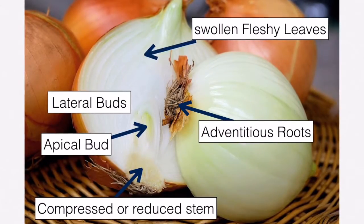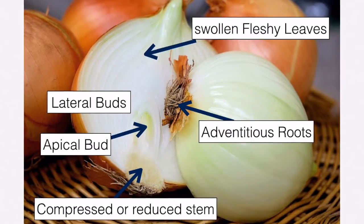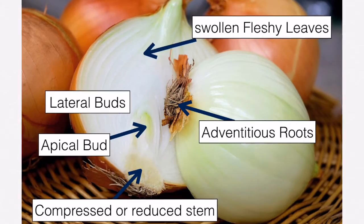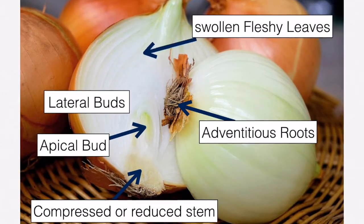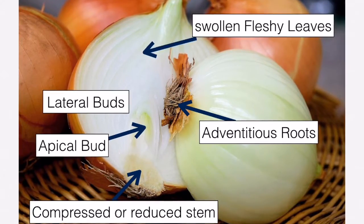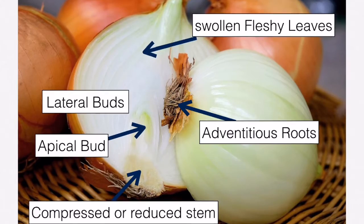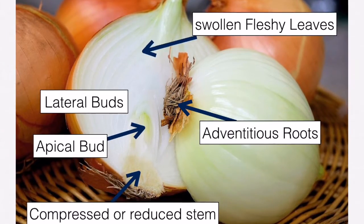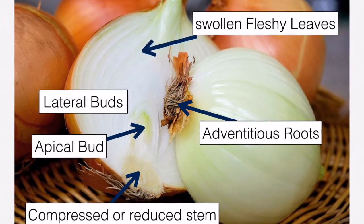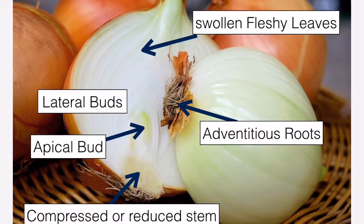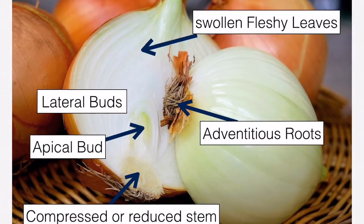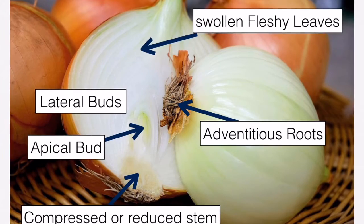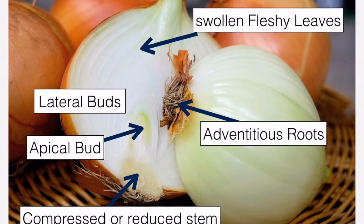What you're looking at when you examine an onion bulb is the new plant, which is going to grow from that apical bud, and the food to fuel that growth comes from those swollen fleshy leaves. That apical bud will sprout, its leaves will turn green, photosynthesise, sending food down to those lateral buds, which have the potential to turn into new onion bulbs.